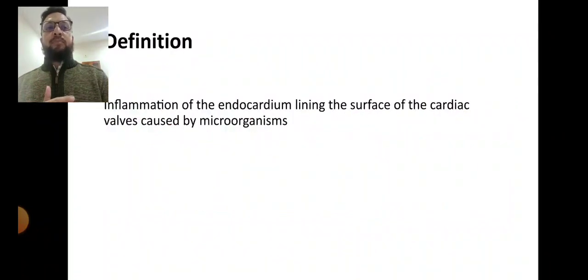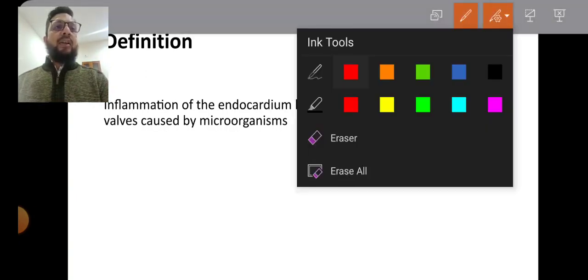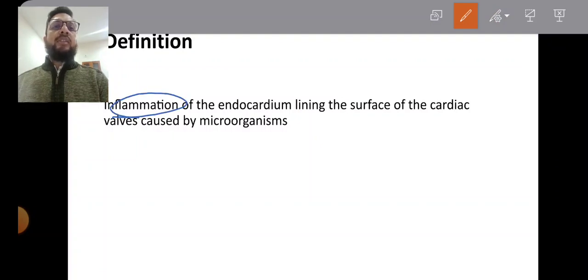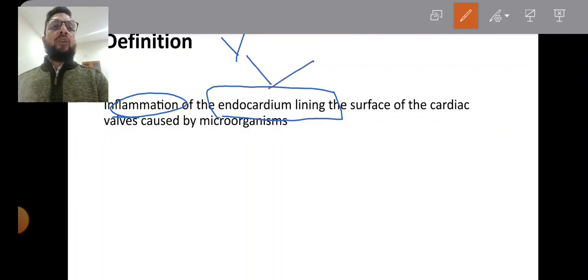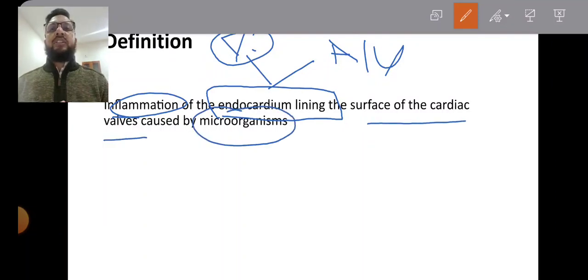Infective endocarditis is defined by three important things: number one is inflammation; number two is the part of the heart involved—specifically the endocardial lining of the valves, not the atrium or ventricle; and number three, this inflammation must be caused by microorganisms. If it is not caused by microorganisms, it is not called infective endocarditis.